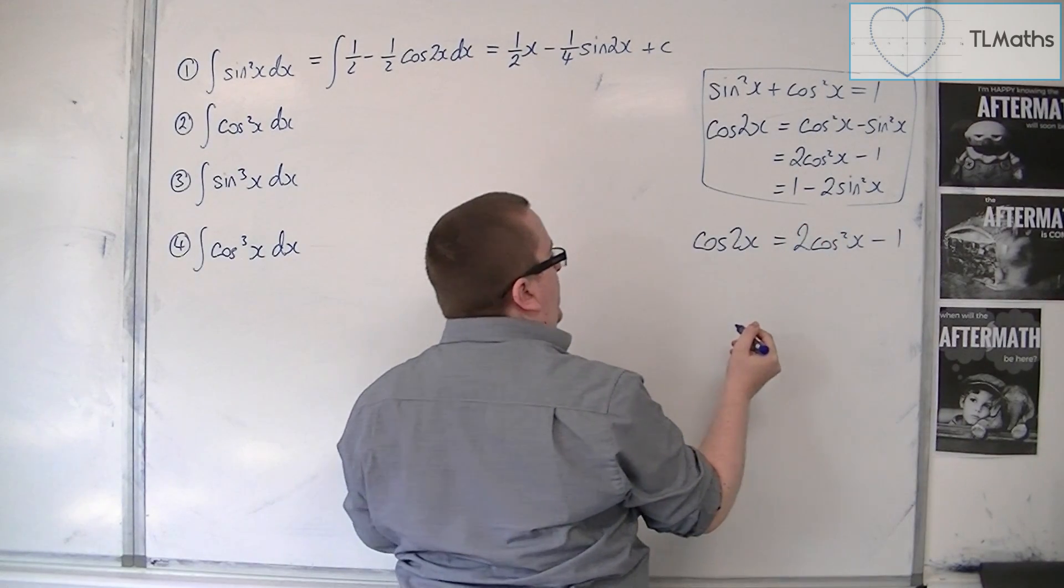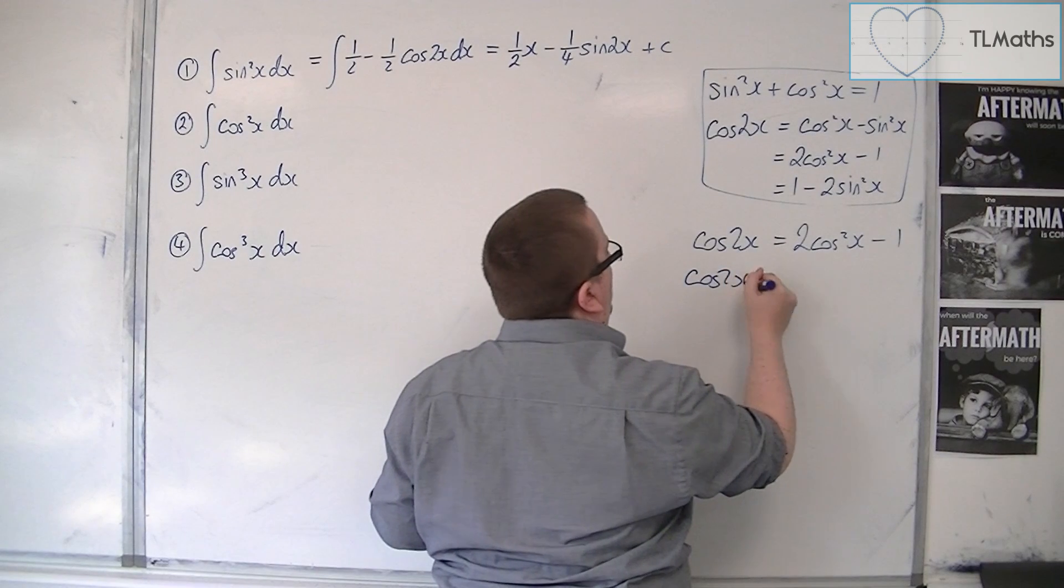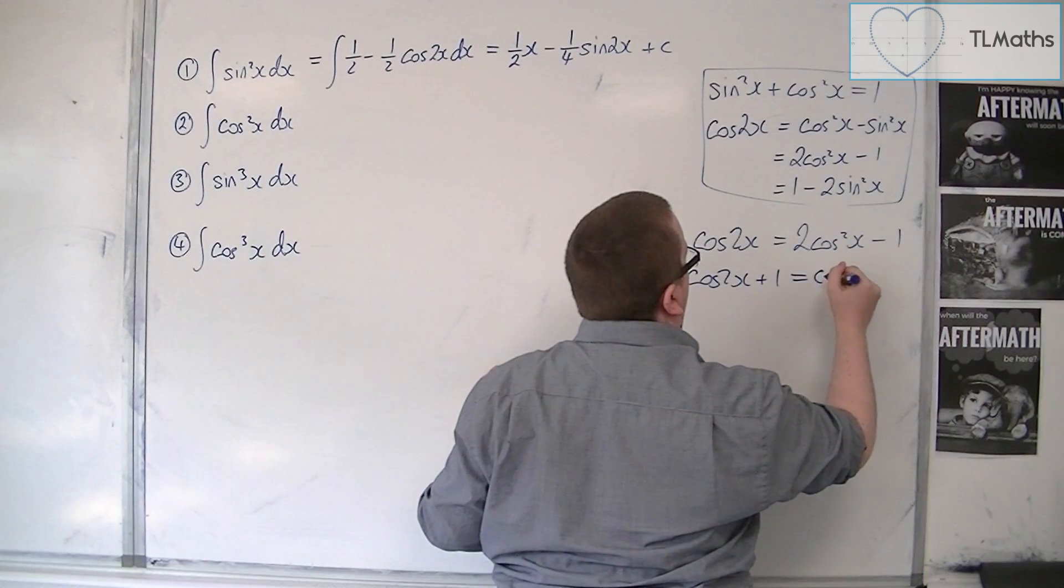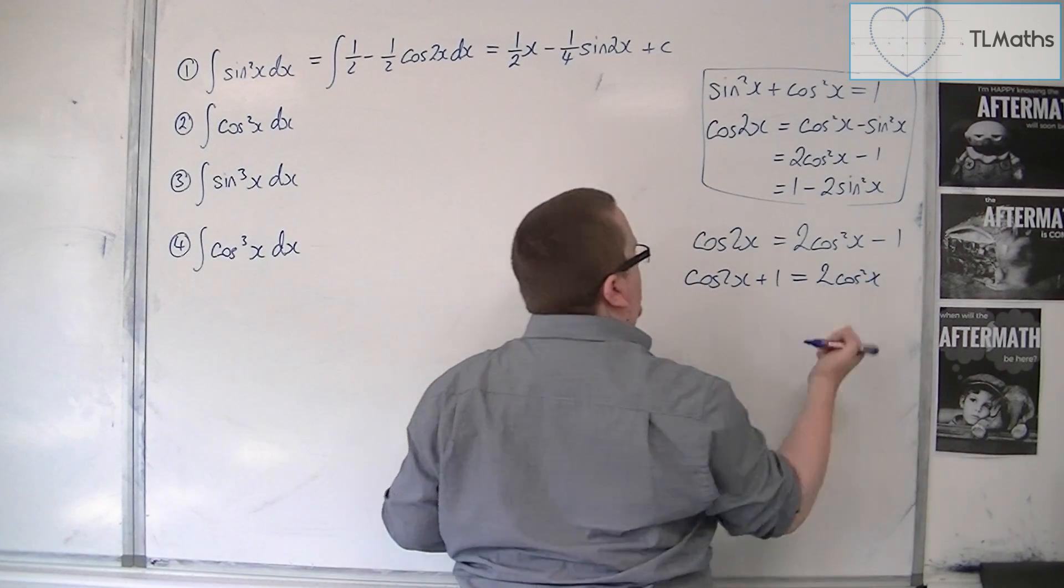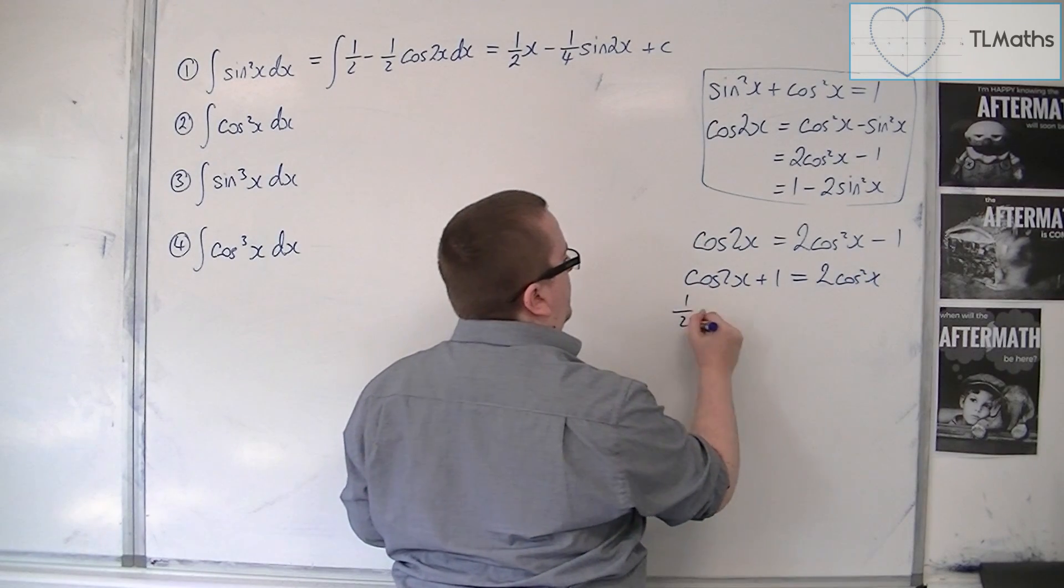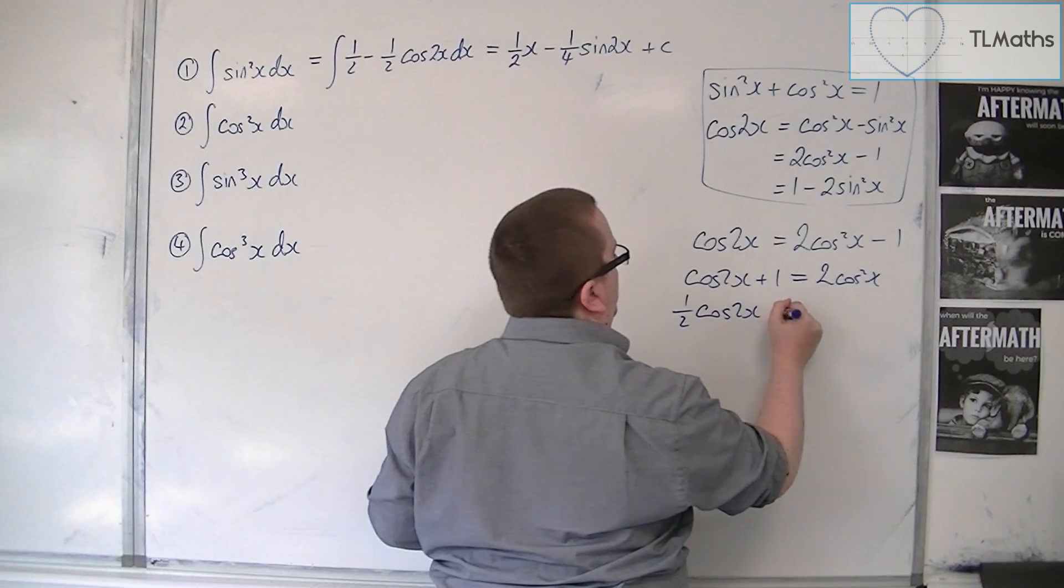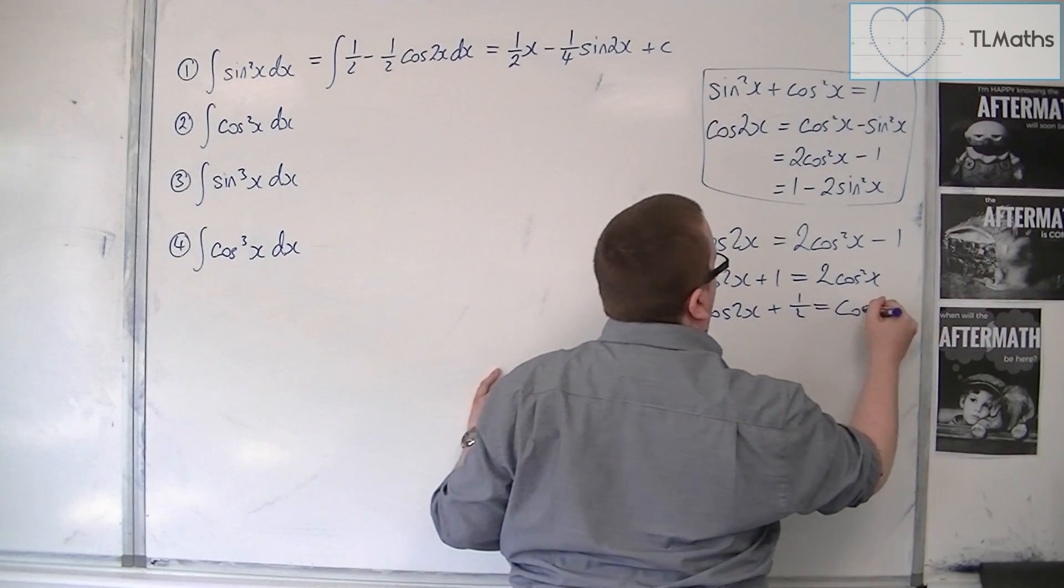So if we rearrange this, we can add 1 to both sides. Oh, still got 2 cos squared. And then you could divide both sides by 2. So a half cos2x plus a half is cos squared.